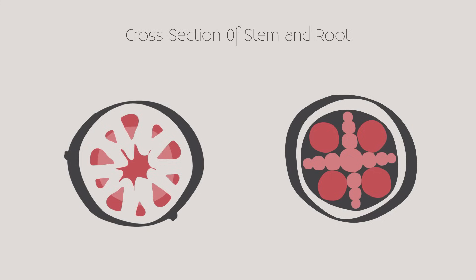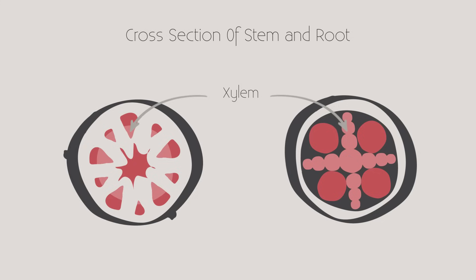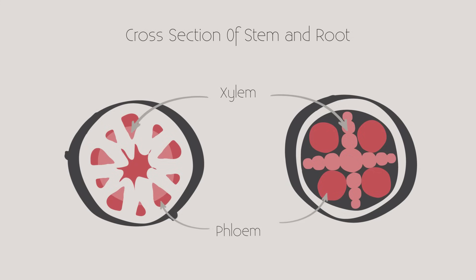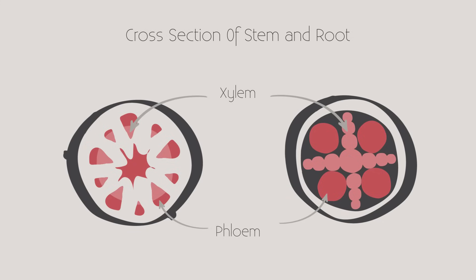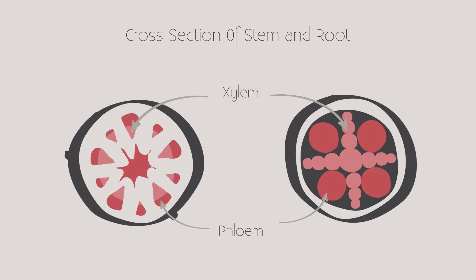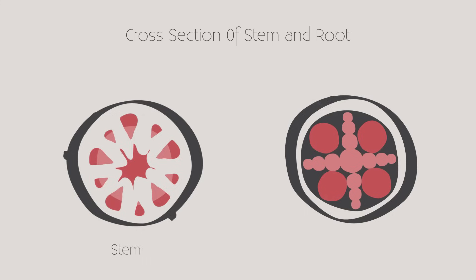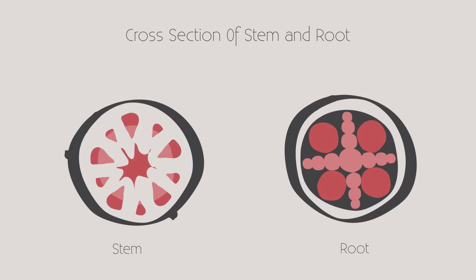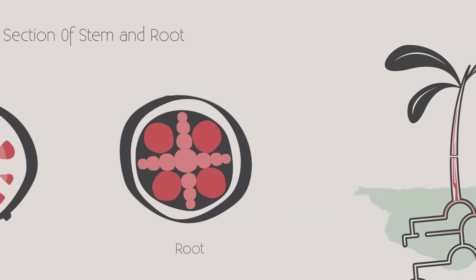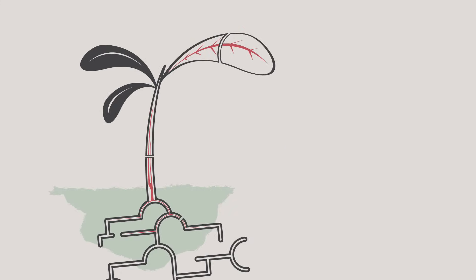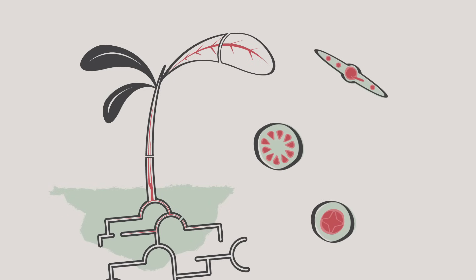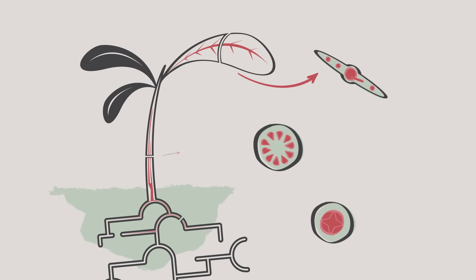Here are the xylem and here are the phloem. Notice how the arrangement is different in the stem and the roots. The xylem and the phloem are found in groups called vascular bundles, and the position of these bundles changes for different parts of the plant.